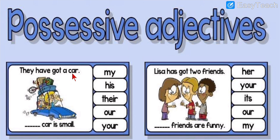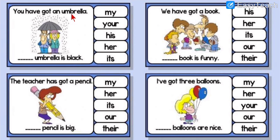They have got a car — dash car is small. Whose car? The car belongs to them. So: their car is small. Lisa has got two friends — dash friends are funny. For Lisa we use 'her' — her friends are funny. You have got an umbrella — dash umbrella is black. It belongs to you — your umbrella is black.